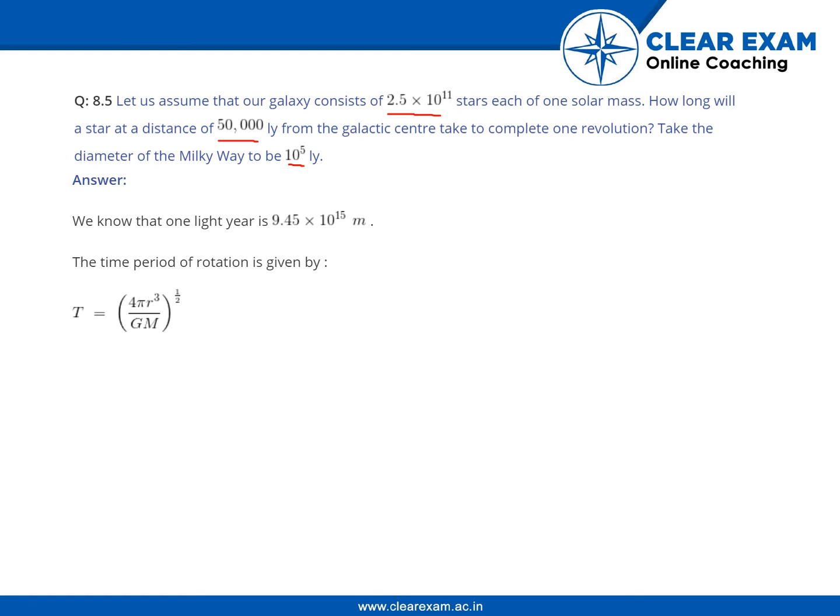We know that one light year is 9.45 into 10 to the 15 meters. This is a constant we need to note. The time period of rotation is given by the formula T equals 4 pi r squared by GM, whole power 1 by 2, that is nothing but the square root.